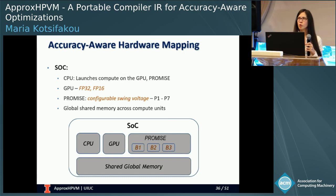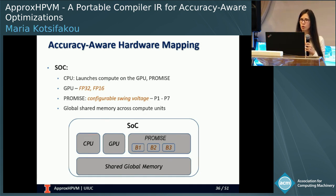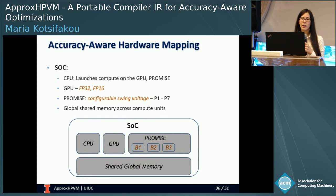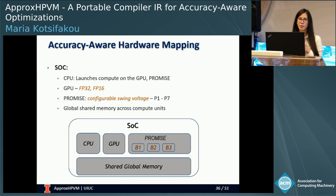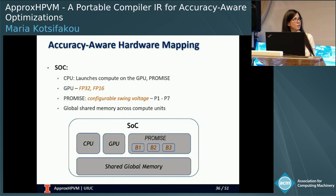Next, we move on to the hardware mapping phase after error budgets have been selected. Since this is a hardware-aware phase, let me describe our SOC first. We have a CPU used to launch computation on our accelerators. Our accelerators are a GPU with FP32 and FP16 precision, and the PROMIS accelerator, which has a swing voltage parameter configurable to seven different levels. Level P1 is the most aggressive — the lowest voltage level, which introduces the most error — all the way up to level seven. The SOC includes global shared memory through which all units can communicate.